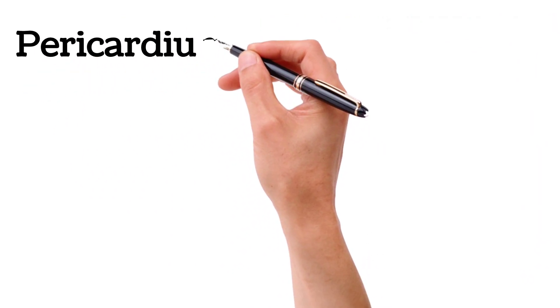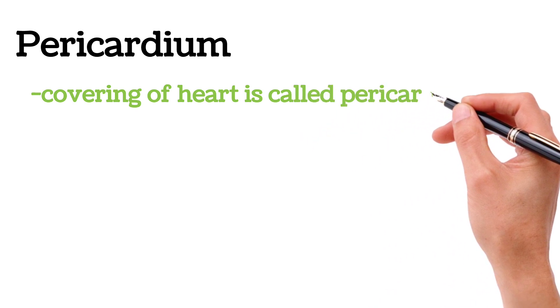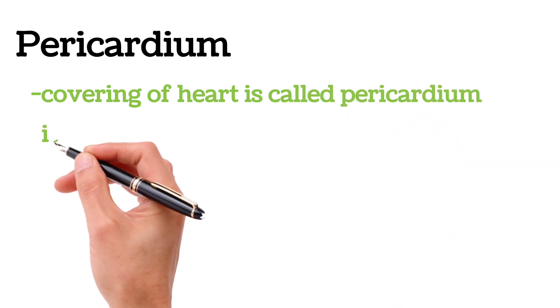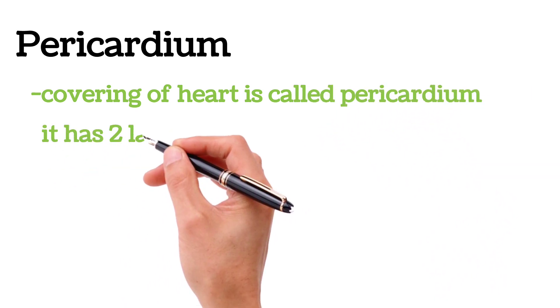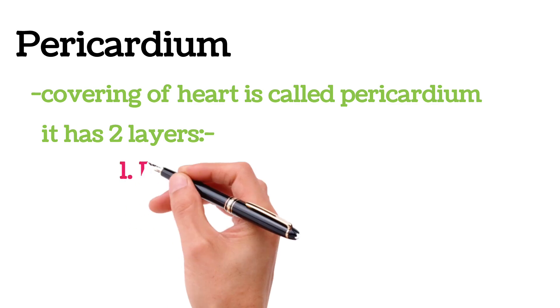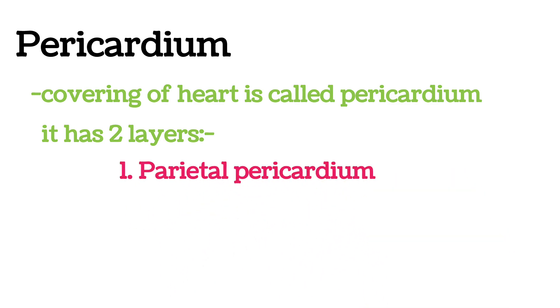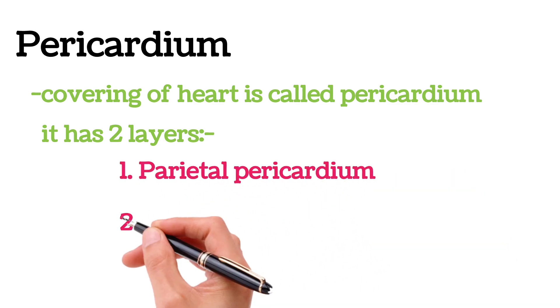Pericardium. The outer covering of the heart is called the pericardium. It has two layers: the outer layer is the parietal pericardium, and the inner layer is the visceral pericardium.